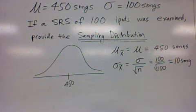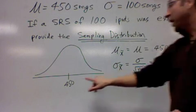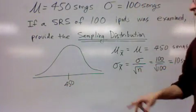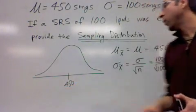That makes a lot of sense. It's very likely that if you have a collection of 100 iPods, that you're probably going to have a sample average that's very, very close to 450.